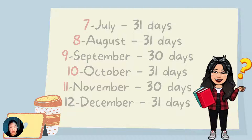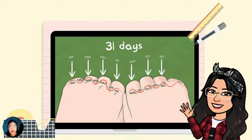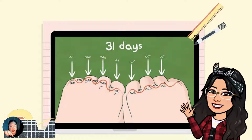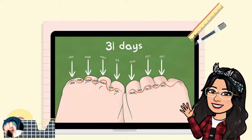Now I will teach you how to identify the days in a month using your knuckles. As you can see, we have January for your first knuckle — January has 31 days. Next, down your knuckle, we have February, which has 28 days. And so on and so forth using your knuckle and the lower part of your knuckle — you count them.